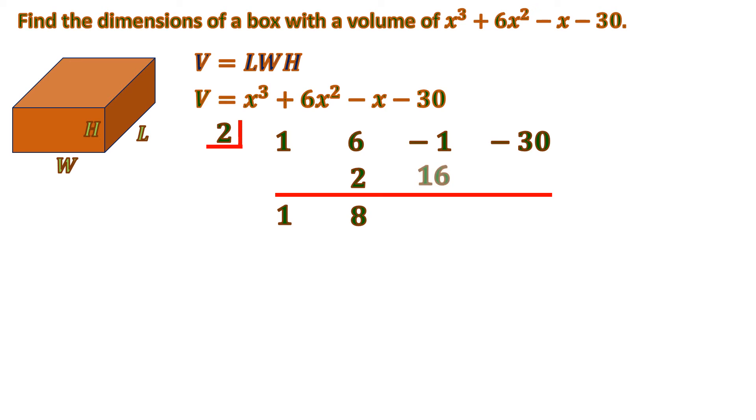Negative 1 plus 16 is 15, and 15 times 2 is 30. Negative 30 plus 30 is 0. So we have our remainder 0. That means one of the roots is 2.